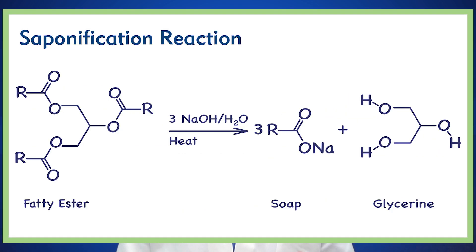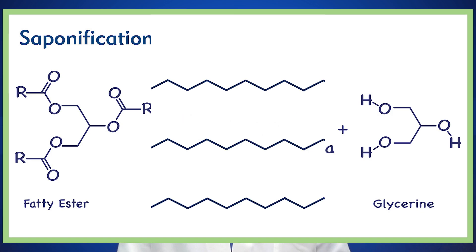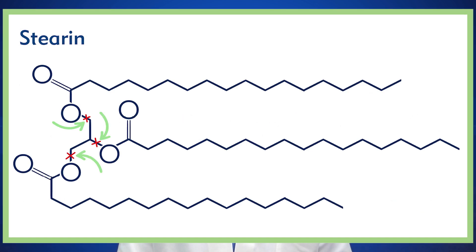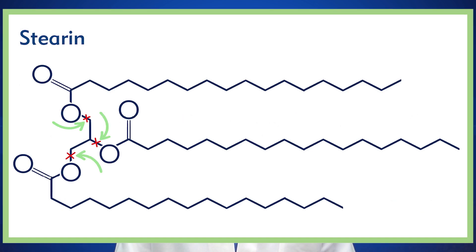The general form of a saponification reaction is this: a fatty ester and an alkali are mixed to form a soap and a glycerol. A common example would be the production of sodium stearate from stearin and sodium hydroxide. The stearin is cleaved at the three ester bonds, producing long-chained carboxylic acids — which is our soap — leaving behind glycerol.